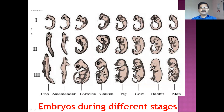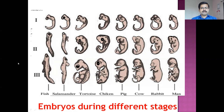Now watch on the screen. This screen represents the embryos during different stages — this picture represents the embryos of vertebrate animals during the different stages. These are the first stage embryos, the second stage embryos, and the third stage embryos of these vertebrate animals. This is the first, second, and third stage embryo of the fish.